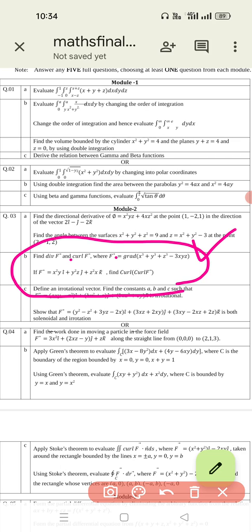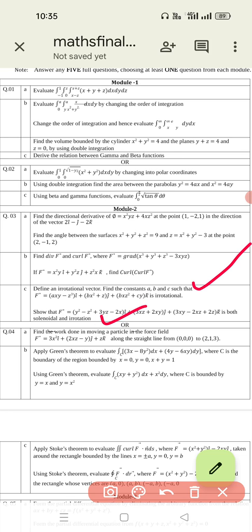In one model question paper they have given find the divergence where some function field f is given. In the second question, if f equals like this, find the curl. Like this the data may change. One question is irrotational, other is irrotational and solenoidal. Use Green's theorem.